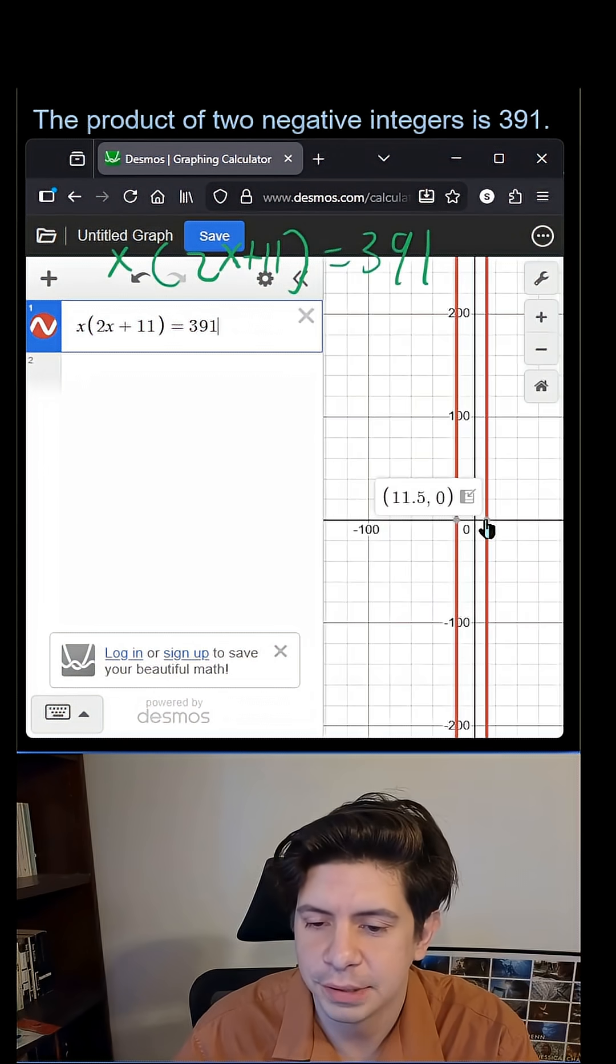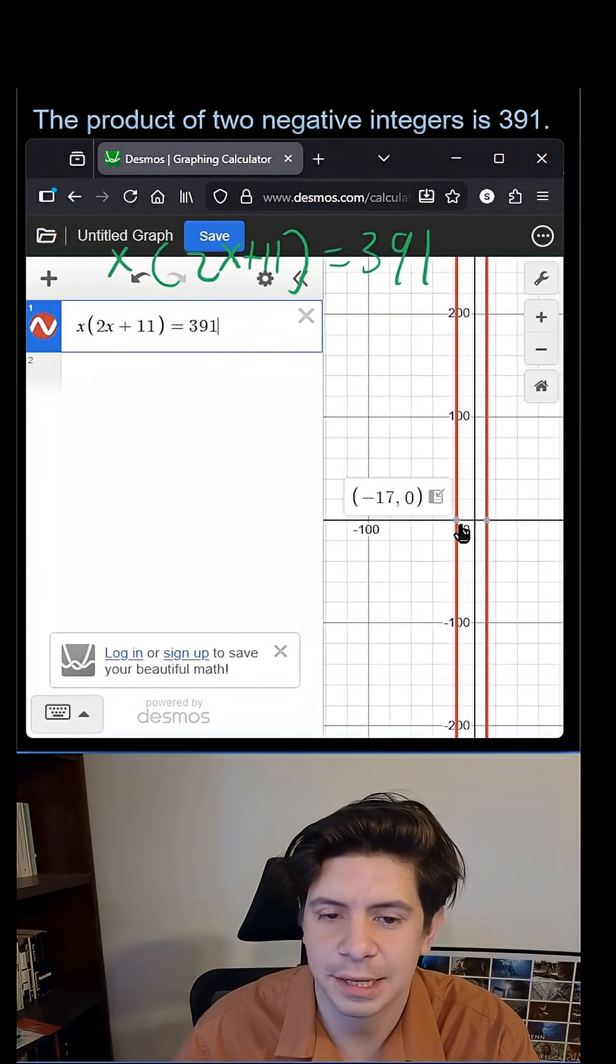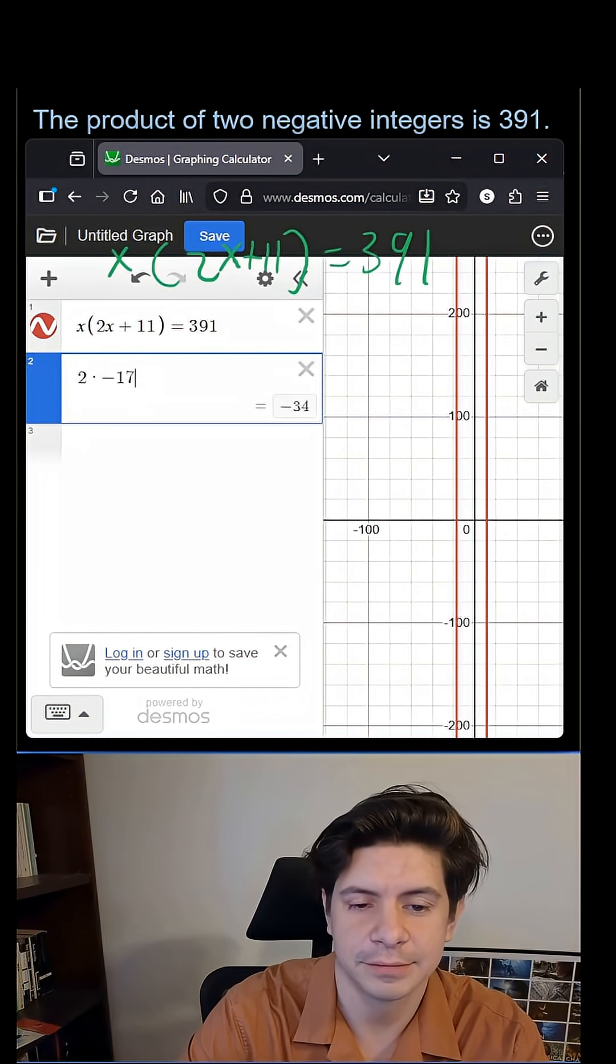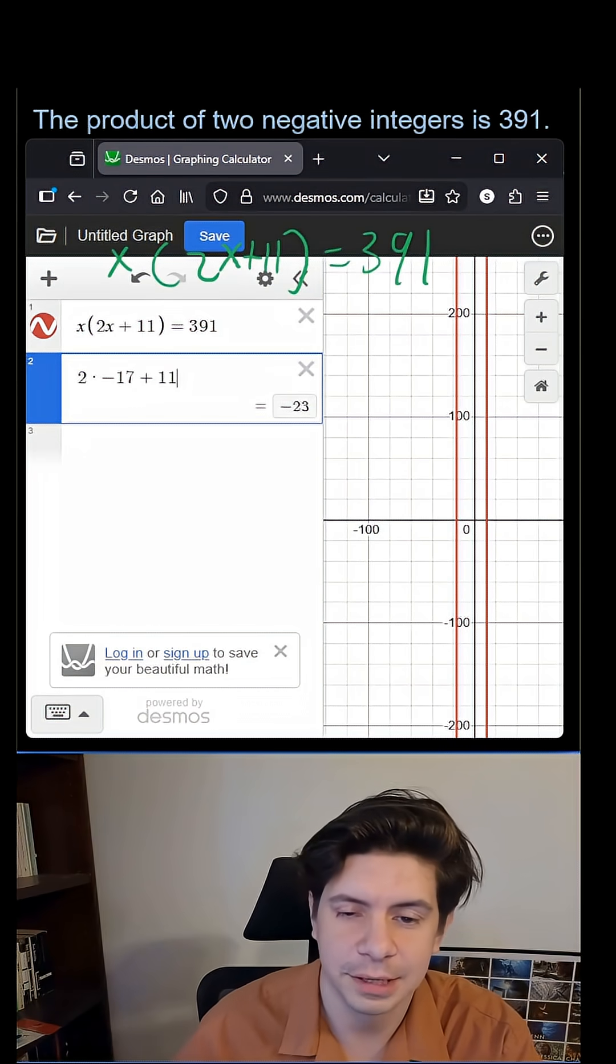Zoom out a bit and you see there's 11.5 and there's the negative 17. And then you just do 2 times negative 17 plus 11 and you get the negative 23 again.